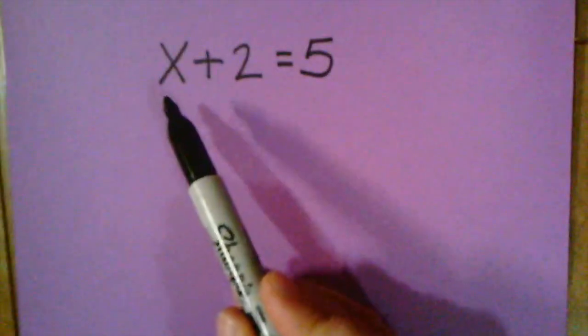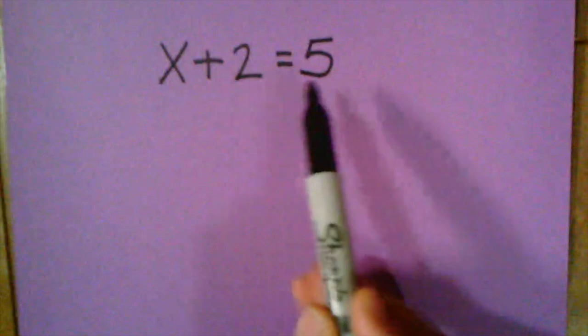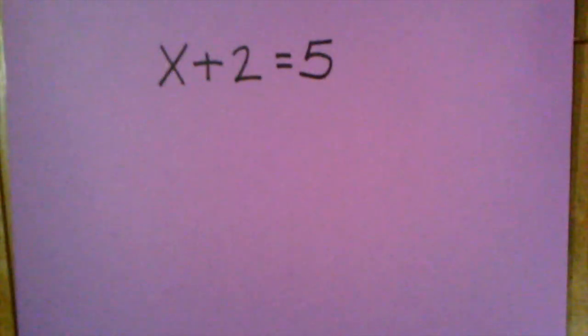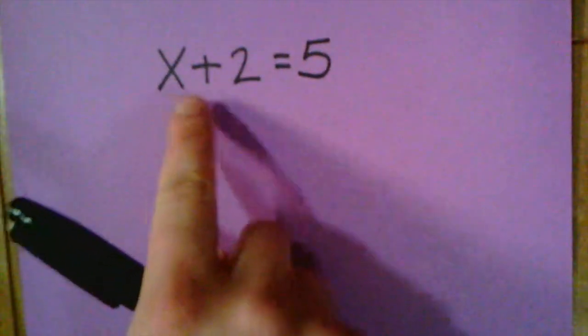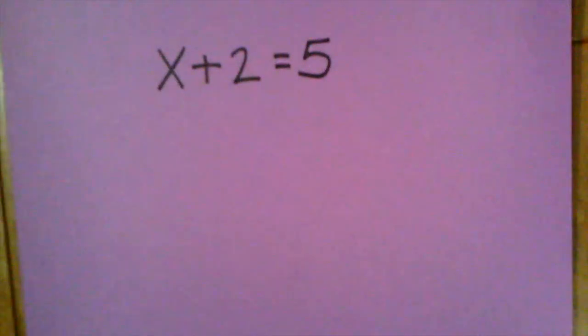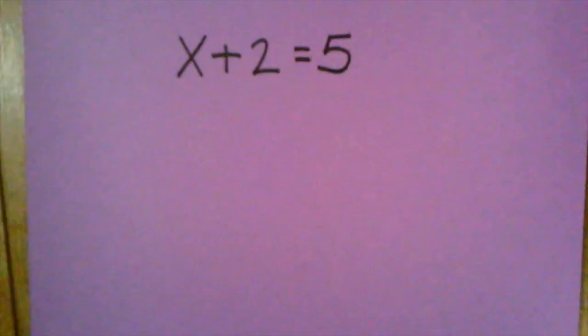To begin, we're going to start with this simple equation here: X plus two equals five. Many of us can look at this equation and know what X should equal because we know our basic math facts. We know that three plus two would end up equaling five, but there are actually multiple ways that we think about this.